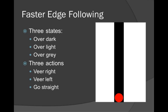We can now have three states: when it's over dark, when it's over light, and when it's over a gray value, which would be right down the middle between dark and light. So now there's going to be three actions. We're going to go veering to the right, veering to the left, and going straight. So this program would look something like: we're over dark, so we veer left.